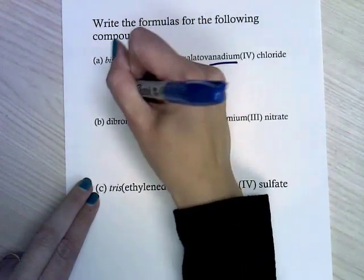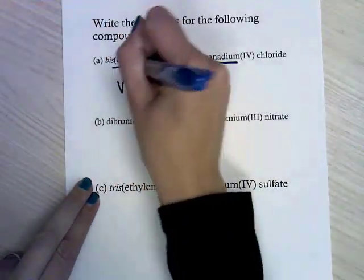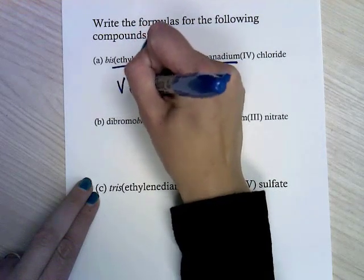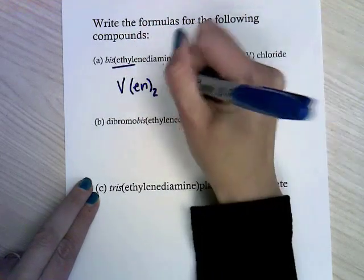For writing my formulas, I start with my metal, so vanadium. Then I have this ethylenediamine, which I'm just going to write En, and bis means 2.